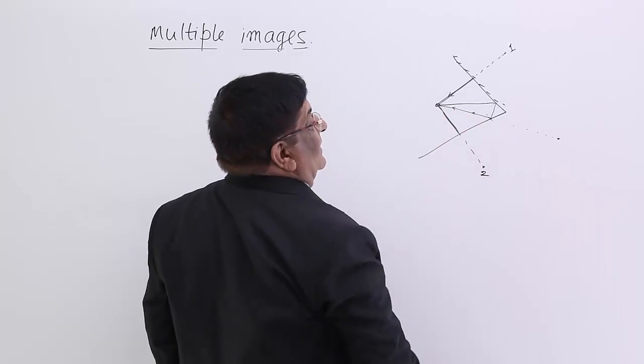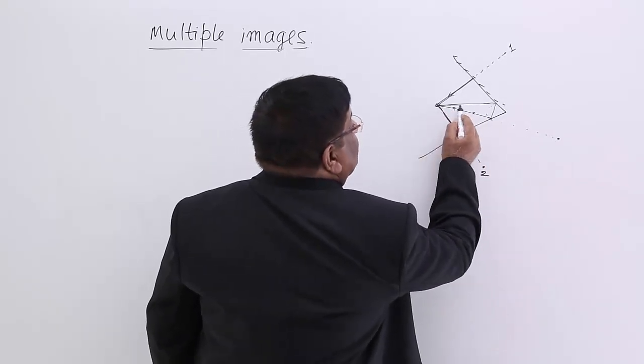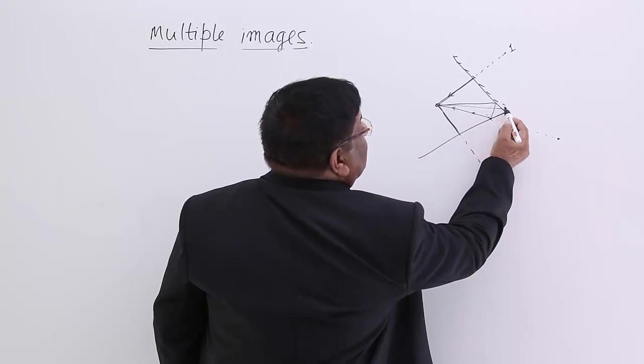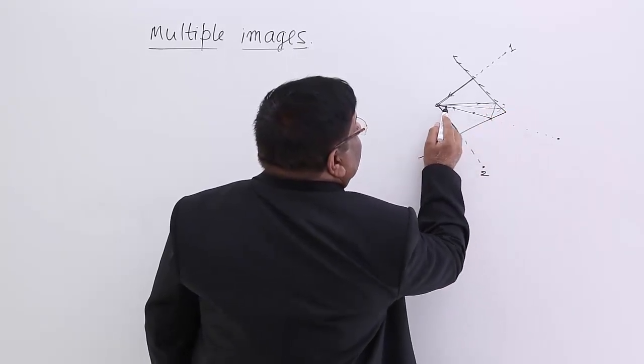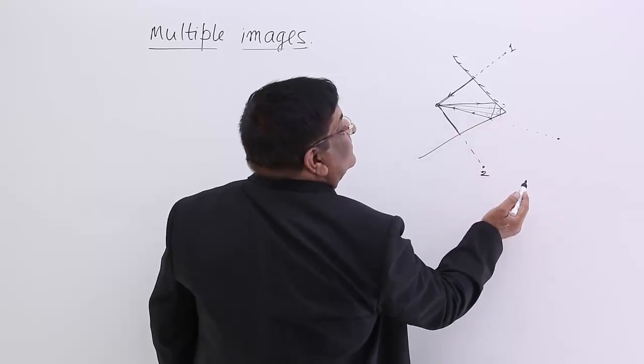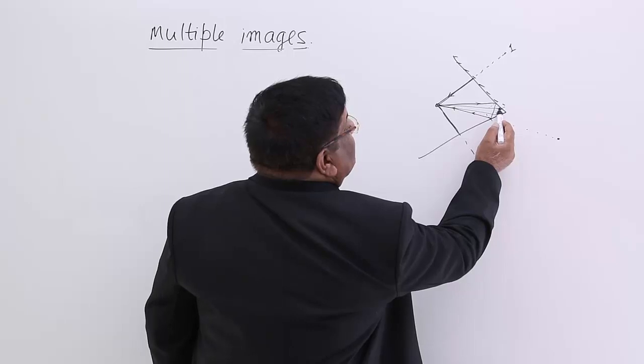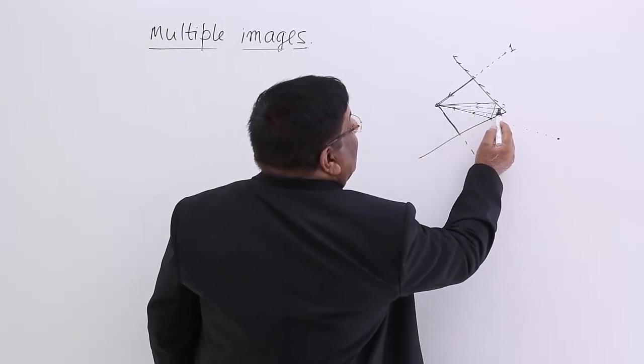This image we observe here. Now there may be another ray going in this direction. It is reflected, this we have seen. The one going in this direction is reflected here, and from here this is reflected in this direction and comes to our eye.